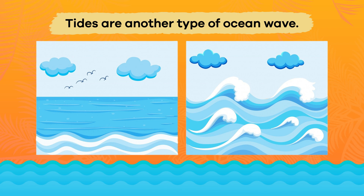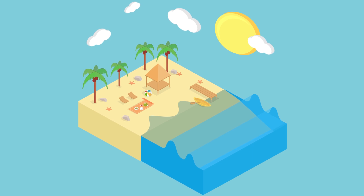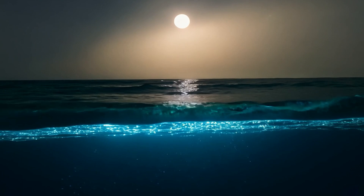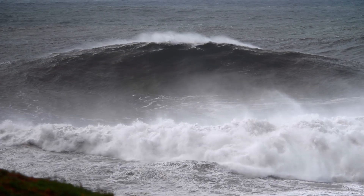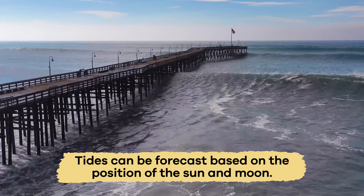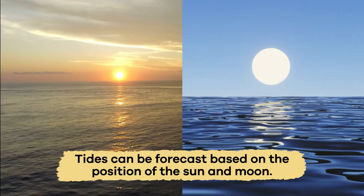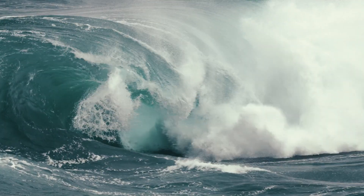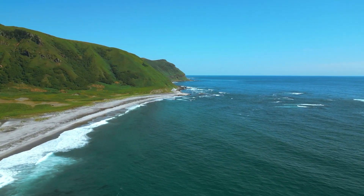Tides are another type of ocean wave. The gravitational pull of the moon and the sun causes the water in the ocean to bulge out, which creates high and low tides. Tides can be forecast based on the position of the sun and moon, and other oceanic factors, which means they are much more predictable than wind-driven waves.